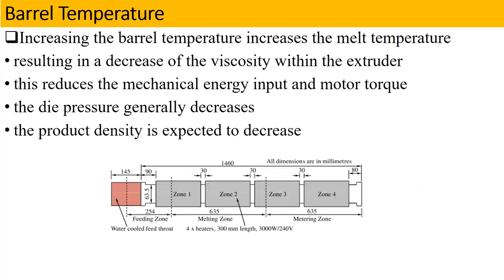Then we have the barrel temperature. The barrel temperature is also a very important characteristic in our extrusion and significantly affects our extrusion process. If you remember the parts of the extruder — in the barrel there is a feeding zone, melting zone, and metering zone. Increasing the barrel temperature increases the melting temperature.